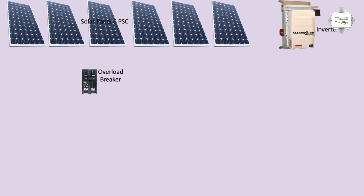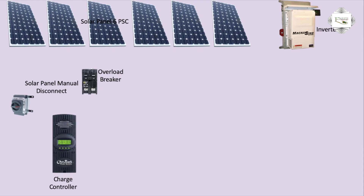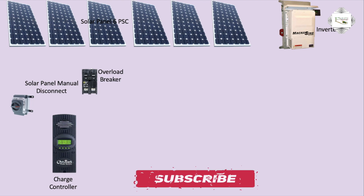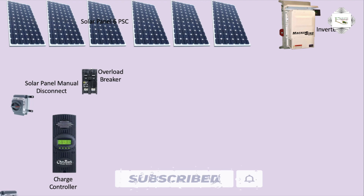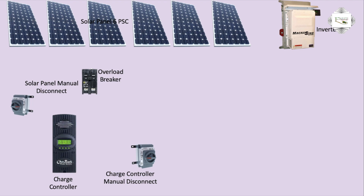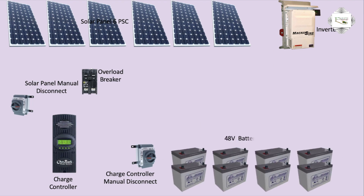The solar panel connects to the charge controller. There is a manual disconnect device for the solar panel, and the charge controller manages voltage to the machine and charging. The battery bank consists of 8 pieces totaling 48 volts in a series or parallel mixture configuration.